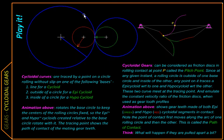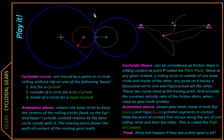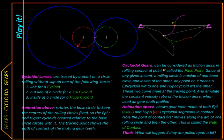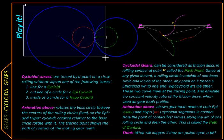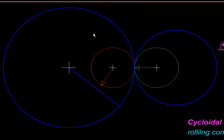Here we have two hollow rollers shown in blue, and they're pressed together with the help of the red and green roller inside them, so that when one starts rolling it transfers the motion to the other through friction.